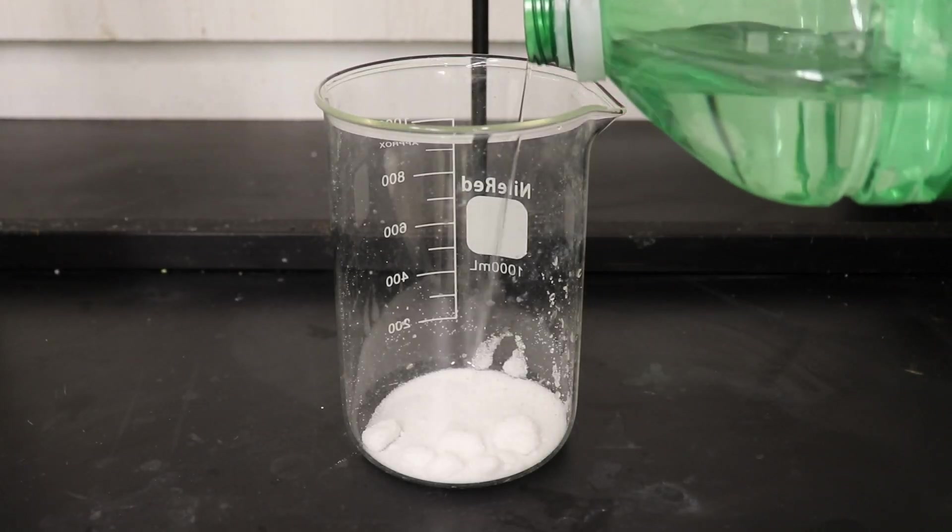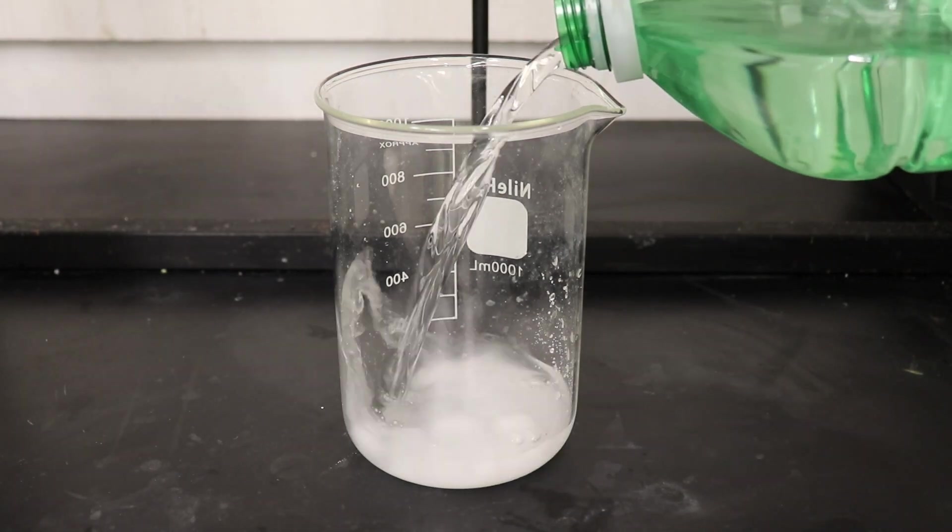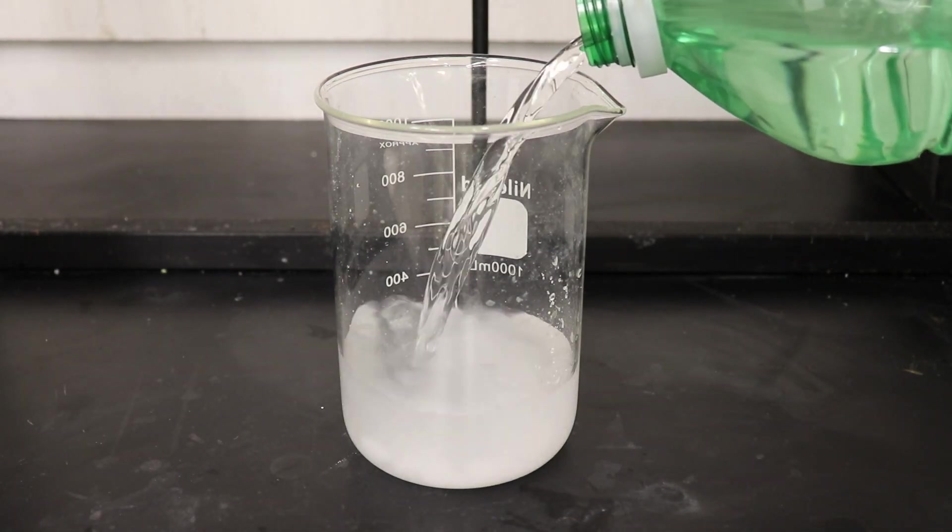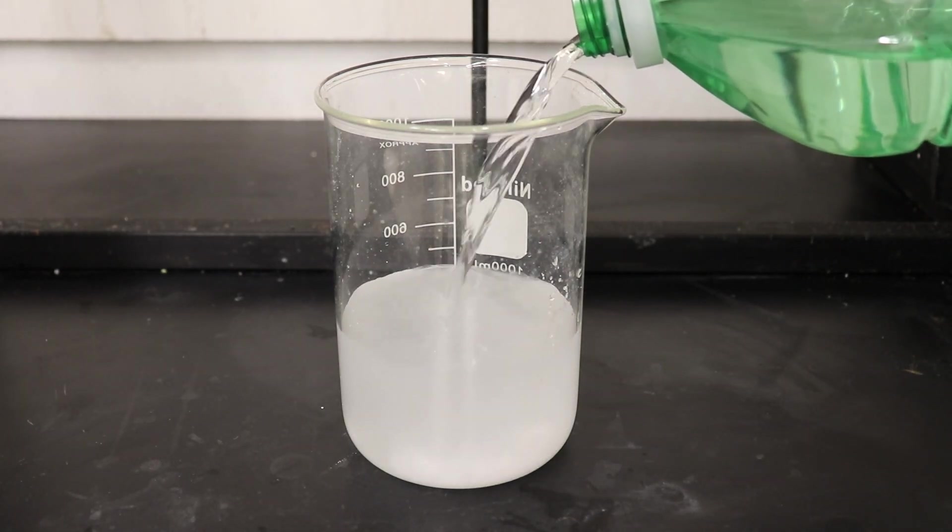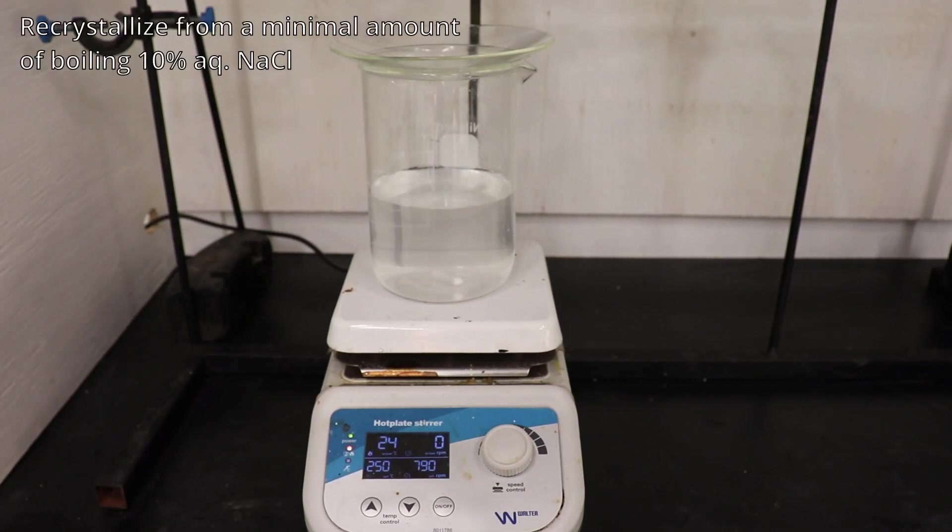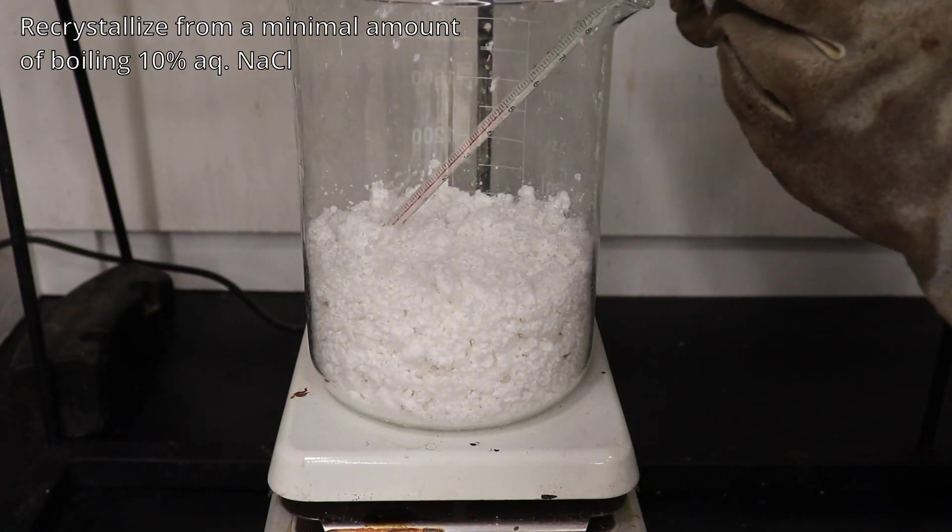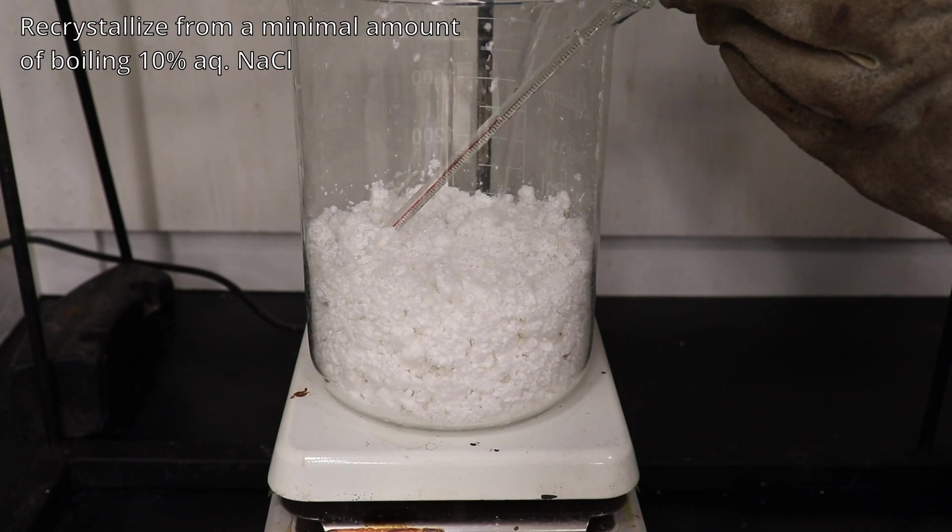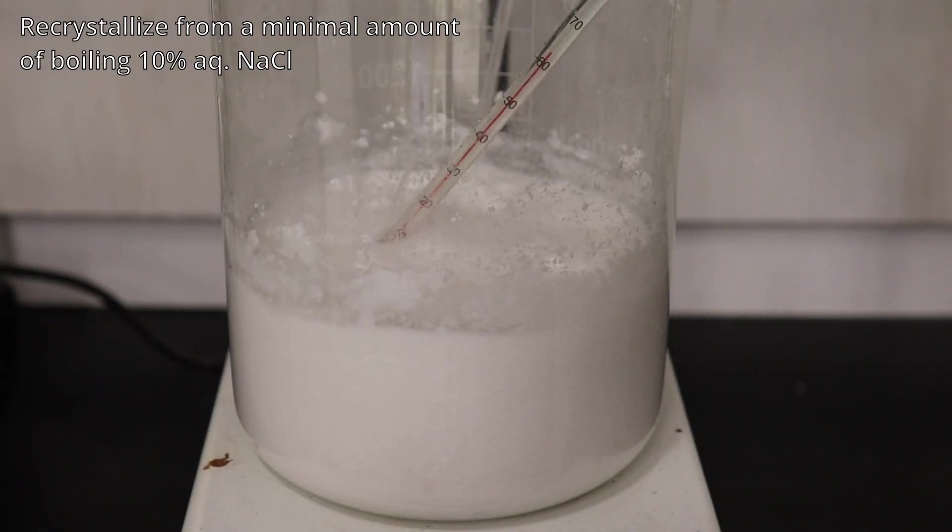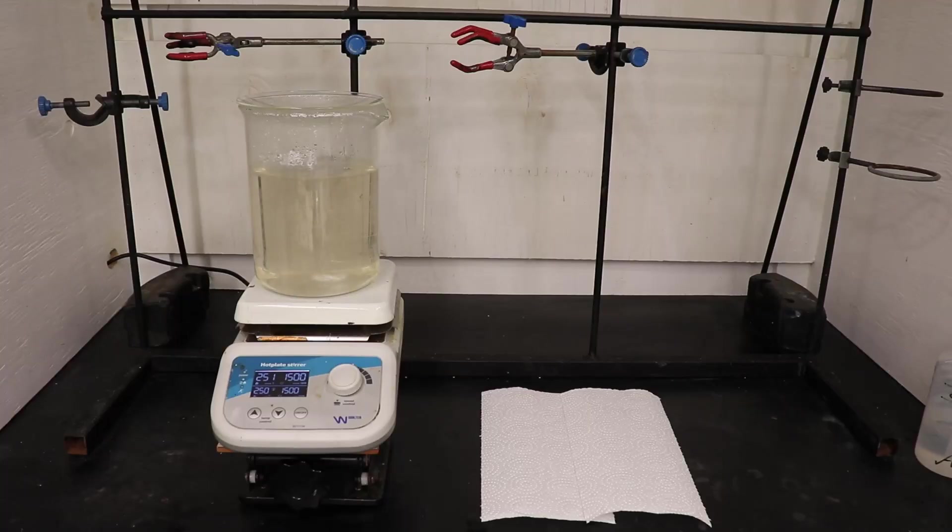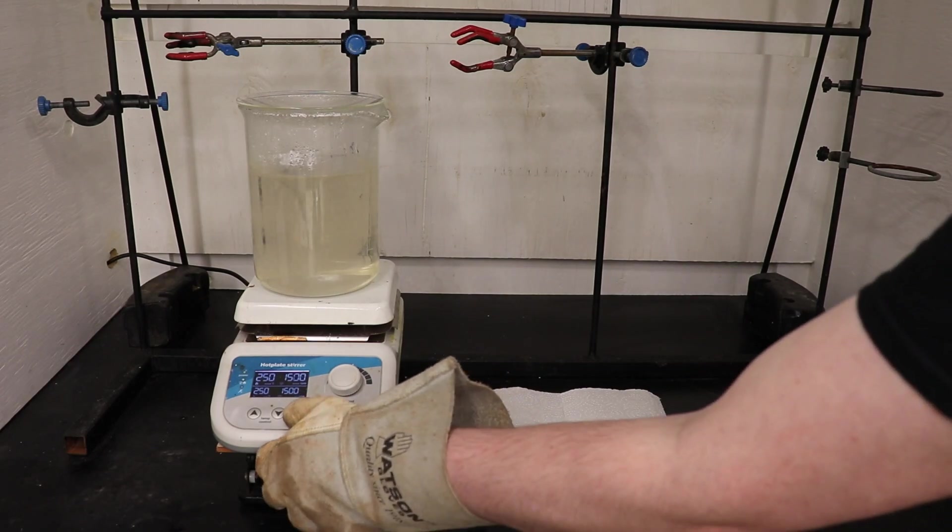A solution of 10% sodium chloride was then prepared and heated to use for the recrystallization of our product. The crude sodium naphthalene 2-sulfonate was dissolved in a minimal amount of boiling 10% sodium chloride solution and was then taken off the hot plate and allowed to crystallize.